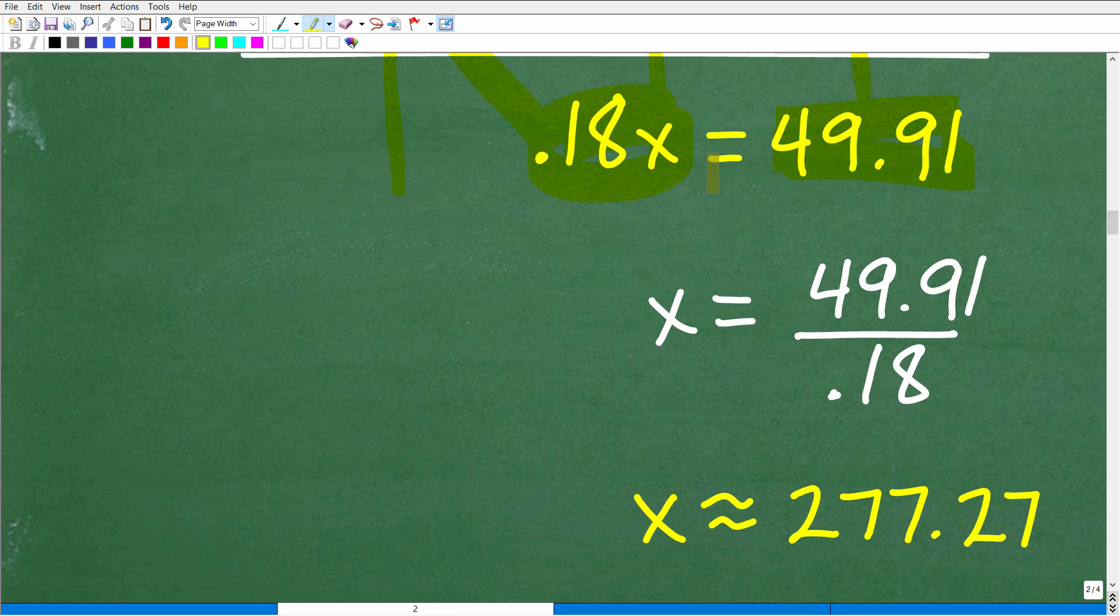Okay. So to solve for x, all we need to do is divide both sides of the equation by 0.18. So we're going to our nice little calculators. 49.91 divided by 0.18 gives us a nice decimal of approximately 277.27. So remember, in mathematics, this is an approximation. So if you're going to round off and you're giving your final answer, use this little squiggly equal sign. That means approximately equal to and not the actual equal sign. That means exactly equal to. So it might seem like a little trivial thing, but it is very important.